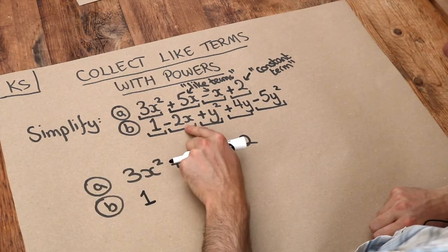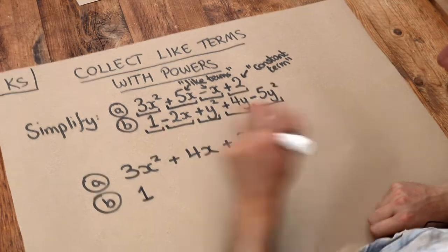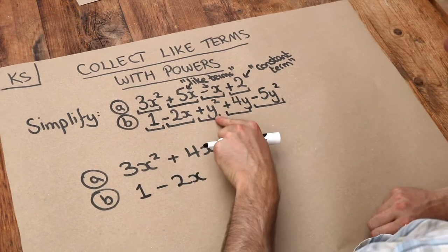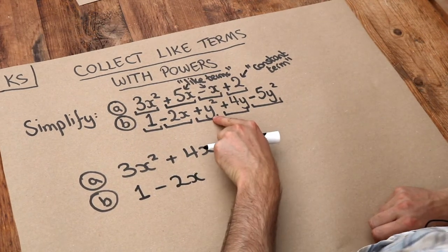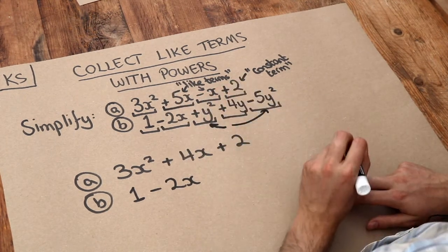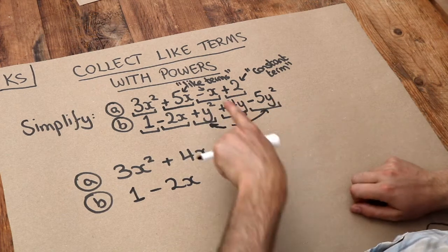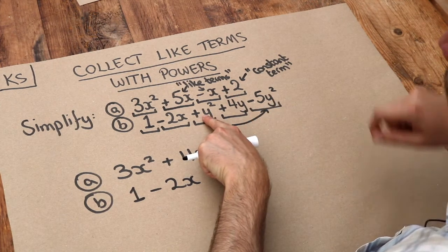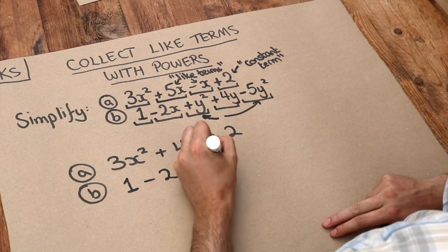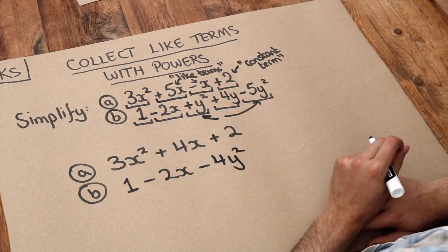So we put the one there. We've got the x term here — are there any other x terms? No, there aren't. So again, we just have that; it doesn't combine with anything else. What about the y squared term? Well, yes — this and this are like terms because they both involve y squared. So we've got one lot of y squared minus five lots of y squared. That's minus four lots of y squared, which we write as minus four y squared.